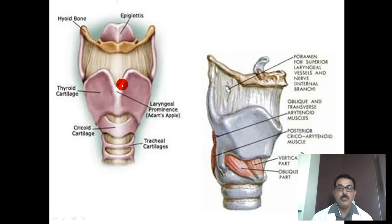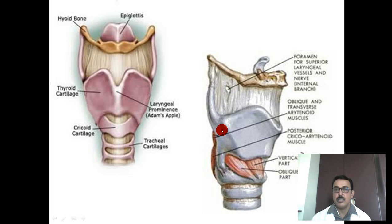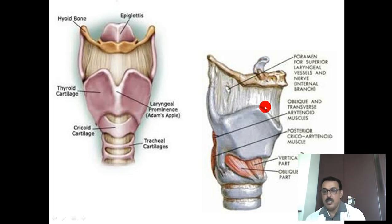This is the anterior view of the larynx and this is the lateral view. You can see the thyroid cartilage, the largest of all, connected to the hyoid bone. Here is the epiglottis and the cricoid cartilage. Below the cricoid you can see the tracheal rings. In the lateral view, the thyroid cartilage lamina is visible with its upper border and cornu. The hyoid bone is shown, and the epiglottis projects upward from its posterior aspect.